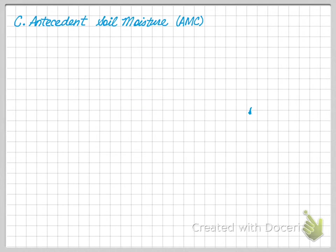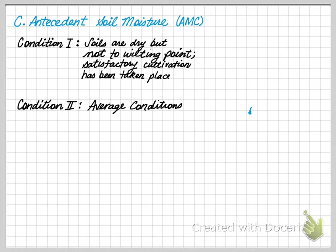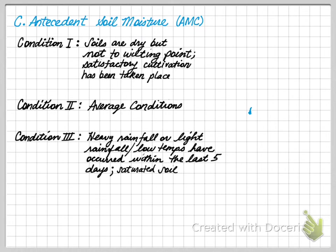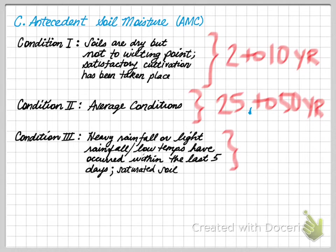Next, what is the antecedent moisture content? It describes how much moisture is in the soil. Condition 1 is soils which are dry, but not to the wilting point — cultivation has taken place. Condition 2 is the average condition. Condition 3 is when the soil is heavily rained on or quite saturated. Condition 1 is assumed for 2 to 10-year storm events. The average condition covers 25 to 50-year events. Anything greater than or equal to a 50-year event is assumed to be Condition 3.